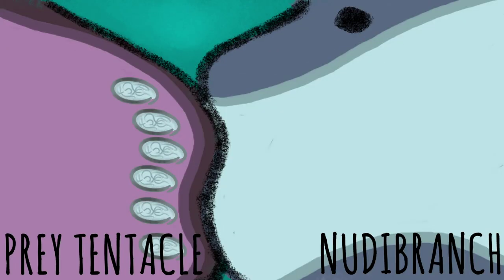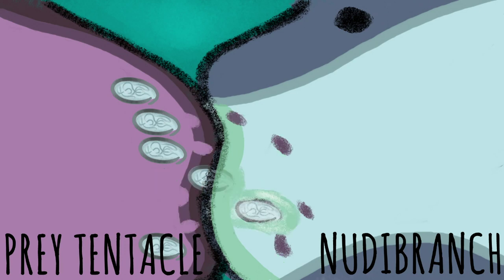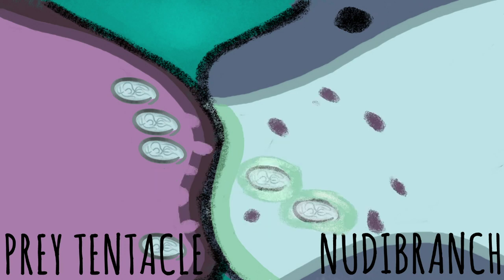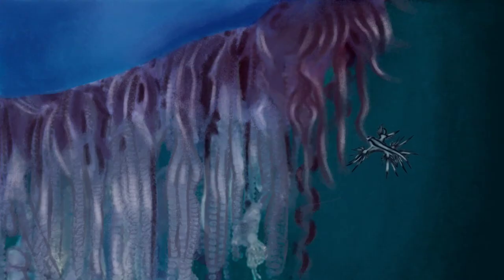However, nudibranchs readily feed on this animal. The nudibranch's first line of defense is its inhibitory mucus, which prevents the stinging capsules from firing. The nudibranch can now graze along the jellyfish's tentacles, giving the nudibranch a nice, painless meal.